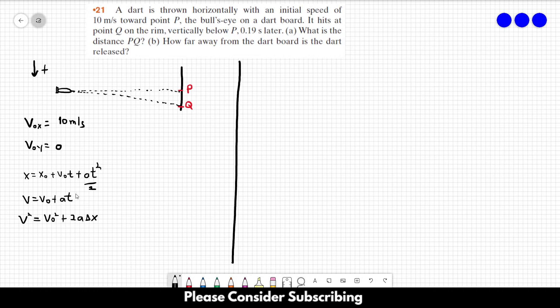We can apply this to the x direction, the y direction, and the z direction if we want. So initially in letter A, we want to find the distance PQ. So the distance PQ is the distance that the dart traveled in the y direction. So we want to find delta y and then we will use this first equation.